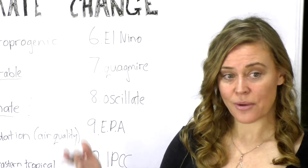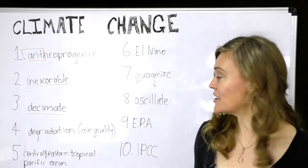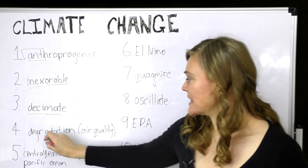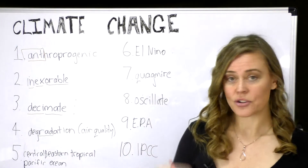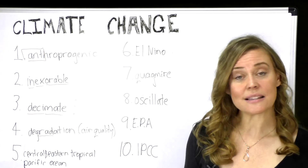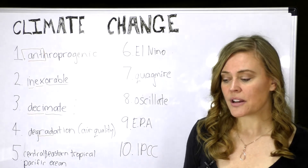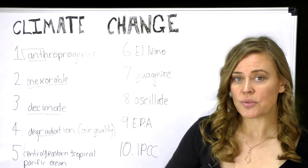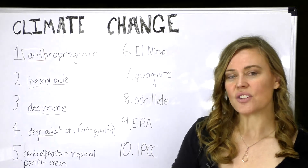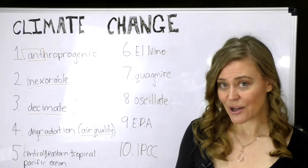Number four: 'degradation.' Think of 'upgrade' — sometimes when you fly you get an upgrade or a downgrade. You can see 'grade' in the word, and going backwards means going to a lower grade. Our keyword is 'car' — imagine your car going backwards down a slope, down a gradual gradient. That is degradation, and of course this applies to air quality degradation.